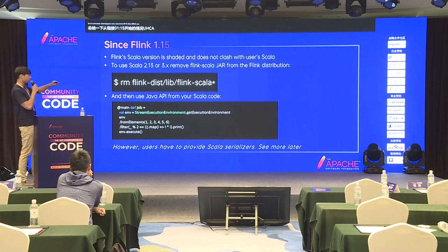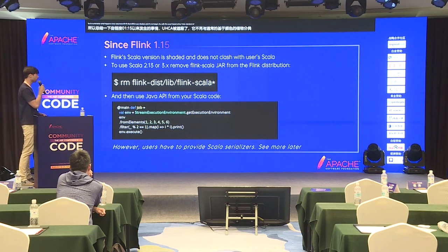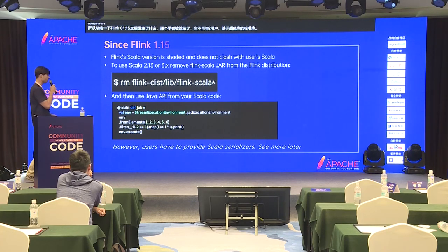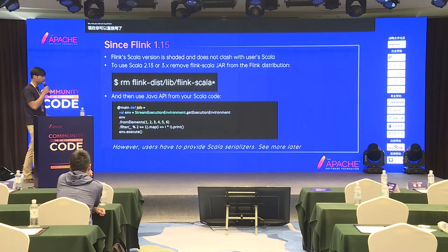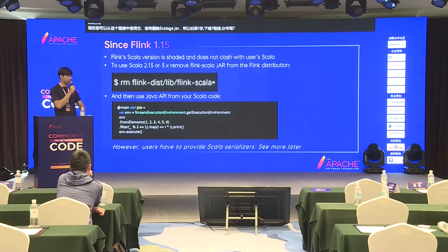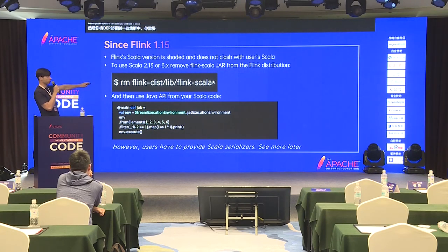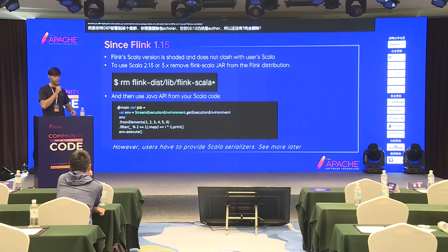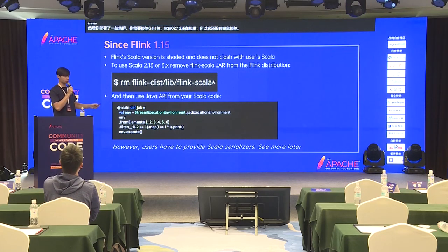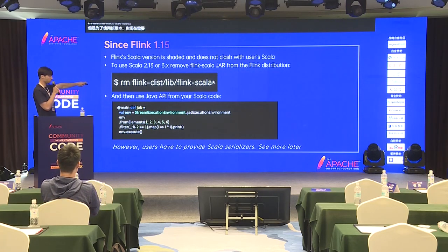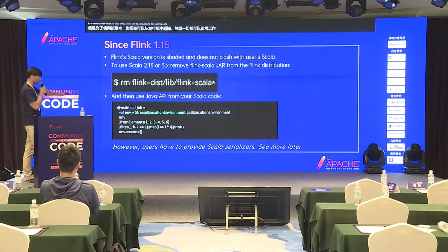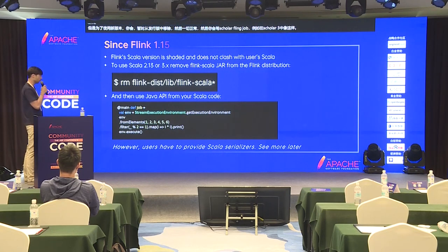Scala was shaded and it no longer clashes with the user-side Scala standard library. Now you can remove the Scala jar from the Flink distribution. If you download the Flink distribution and deploy it to a cluster, you would need to remove the packaged Scala — it's still there for 2.12, not yet removed completely. But in order to use a newer version, you would for now remove it from the distribution, and then everything works fine. Then you would write your Scala Flink job in Scala 3 like in the example, and it will work.